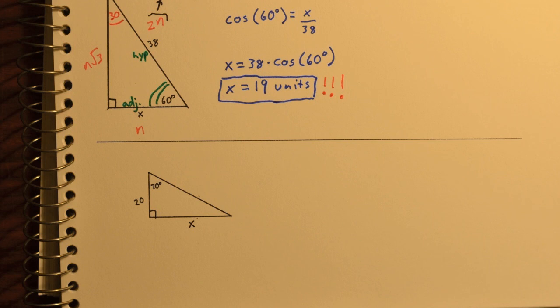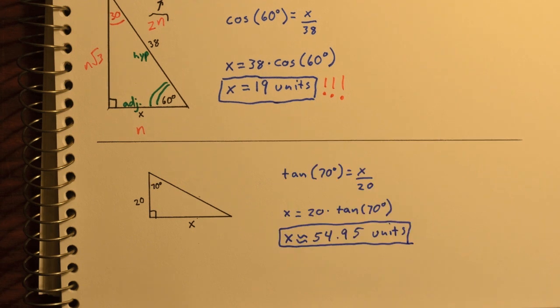One final example. Try it on your own. Here we've got a 70 degree angle, a 20 unit side, and x. Pause the video, give it a shot on your own. You should have used the tangent function. So the tangent of the angle equals opposite over adjacent. So therefore x equals 20 times the tangent of 70, which is about 54.95 units long.